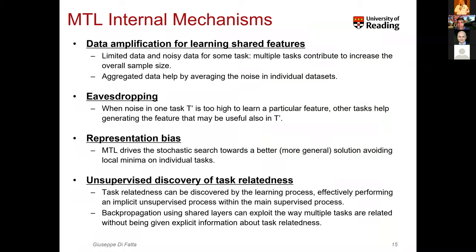The third mechanism is the hypothesis space search. Our models in deep learning are quite complex, with a large number of parameters, and what we do is a heuristic method to search the space of solutions. The worst risk in heuristics is to fall into the trap of local minima. That may happen in individual tasks if you approach each independently. But when you work together with many tasks, the inductive bias is a way to protect the search strategy from falling into local minima for individual tasks. The representation bias helps the search toward a general solution, far away from local minima.